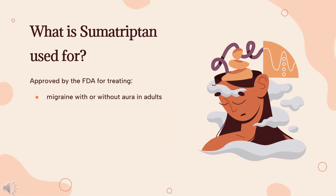What is sumatriptan used for? A combination sumatriptan and naproxen tablet is indicated for the treatment of migraines with or without auras in patients 12 years of age and older. Sumatriptan nasal powder, nasal spray, subcutaneous injection, and tablets are indicated to treat migraines with or without auras in adults. One of the subcutaneous formulations of sumatriptan is also indicated to treat cluster headaches in adults, while the other subcutaneous formulation is not.